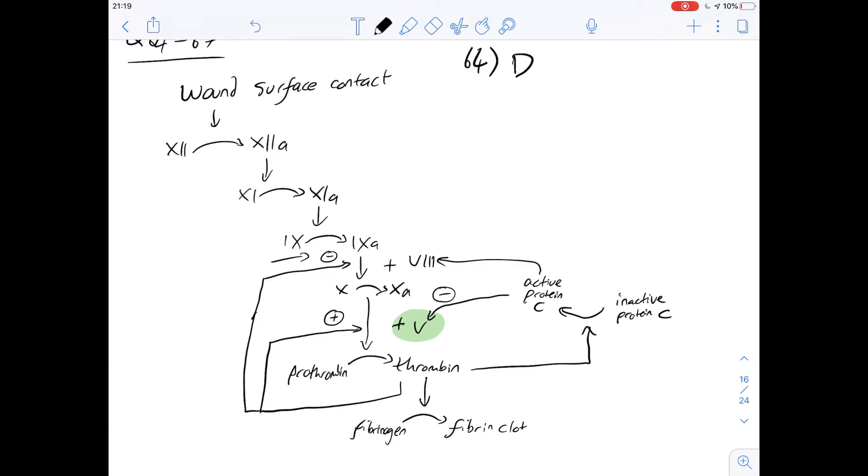Question 65 says which one of the following is most likely the role of factor 8. I'll highlight it here for clarity. Option A says it enhances the activity of factor 9a. Option B says it helps in the conversion of factor 9a to factor 10a. Well, 9a doesn't get converted into 10a. 9a works with factor 8 to convert 10 to 10a. It's not that one factor can turn into another; it can only turn from its normal state into its active state, and that's what the little 'a' means.